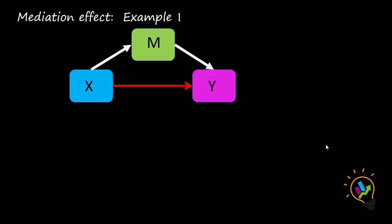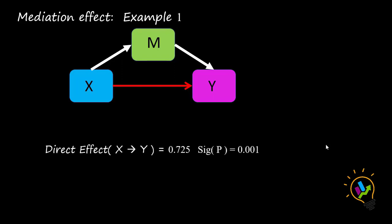Now we will take the first example. In this example, three variables X, Y, and M are taken. The data is loaded into the required software — in this example you can use SPSS AMOS or SmartPLS. Once the data is loaded, you run the model and check the significance, that is the model fit. You can check the model fit in AMOS or in SmartPLS. Once model fit is confirmed, check the first important thing: the direct effect.